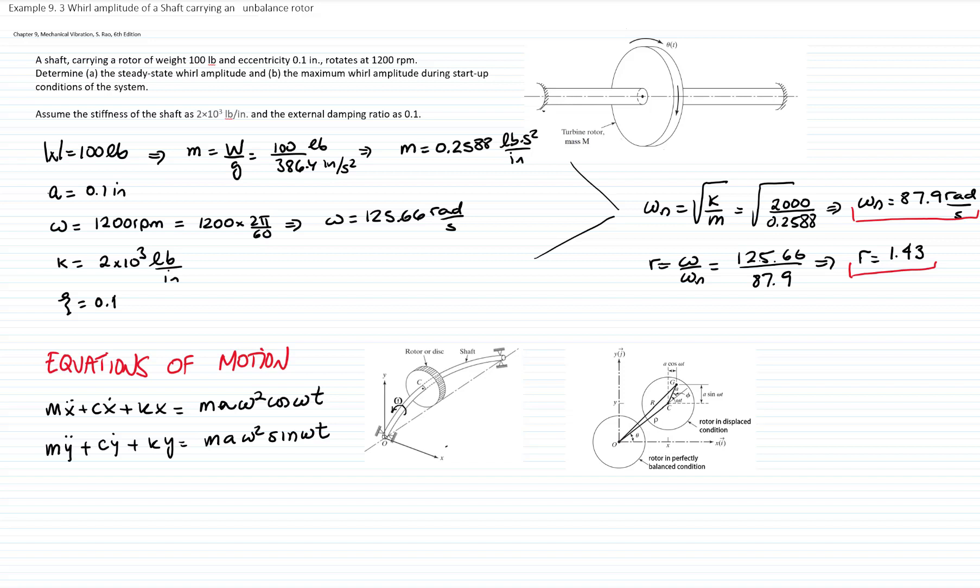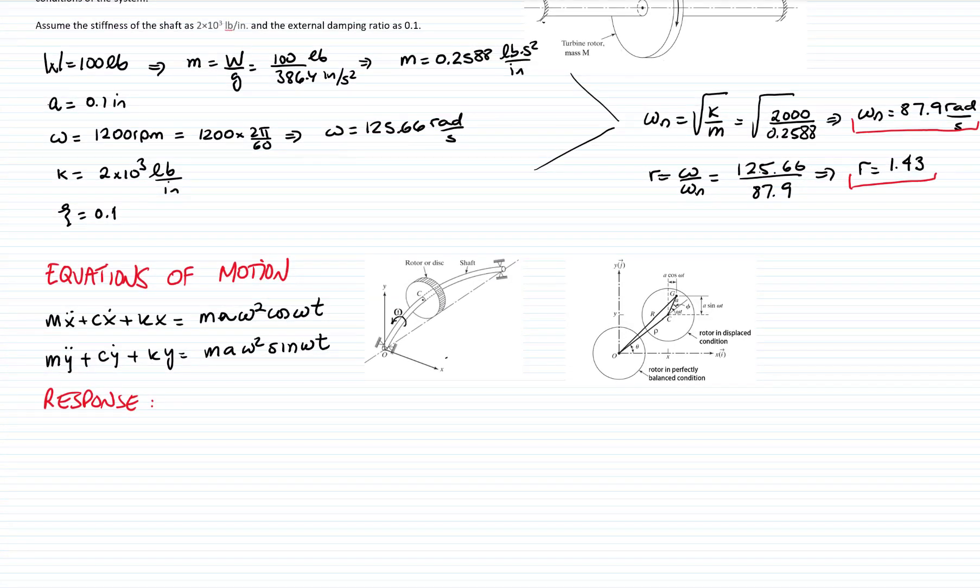And remember that I will use the response for an unbalanced system. And in this case, the mass of the unbalanced is the total mass of the rotor. Therefore, the response is a r² M, which is the magnification factor, cosine of ωt minus a phase angle. And very similar for y, and in this case is sine of ωt minus the same phase angle.